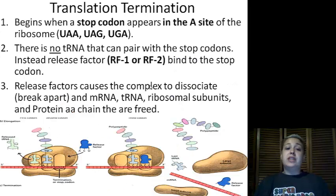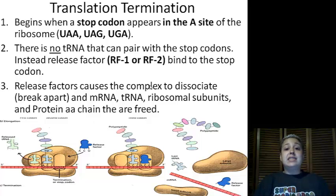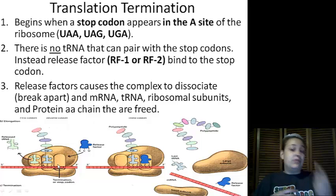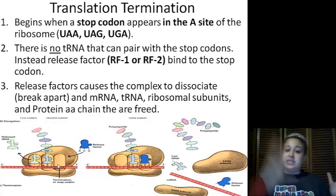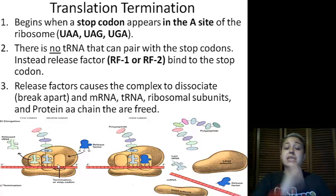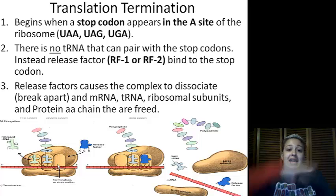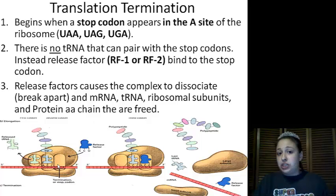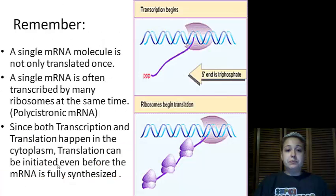Termination begins with a stop codon. There are three types of stop codons: UAA, UAG, and UGA. The stop codon appears in the A-site, and there are no tRNAs that can bind to it. Instead, a release factor — either release factor 1 or 2 — comes into the A-site and causes the whole complex to dissociate. The mRNA, tRNA, ribosomal subunits, and protein are all released. The final step to making a functional protein is that it must fold into its correct conformation or shape so it can go out and do what it's supposed to do.